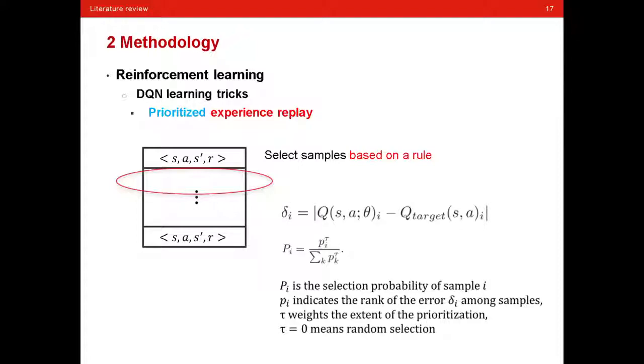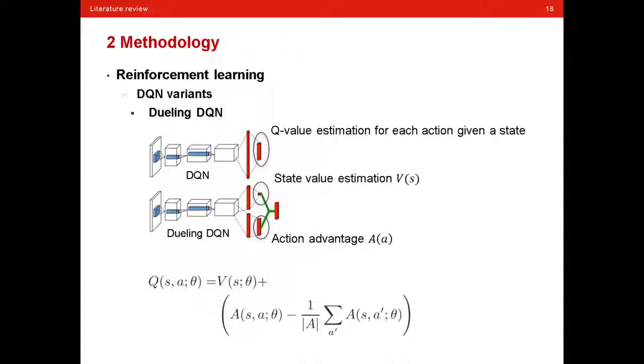Original DQN has some drawbacks, including unstable learning process, and getting stuck into local optima easily. Recent years have introduced some DQN variants in pursuit of better learning performance. The first is Dueling DQN.